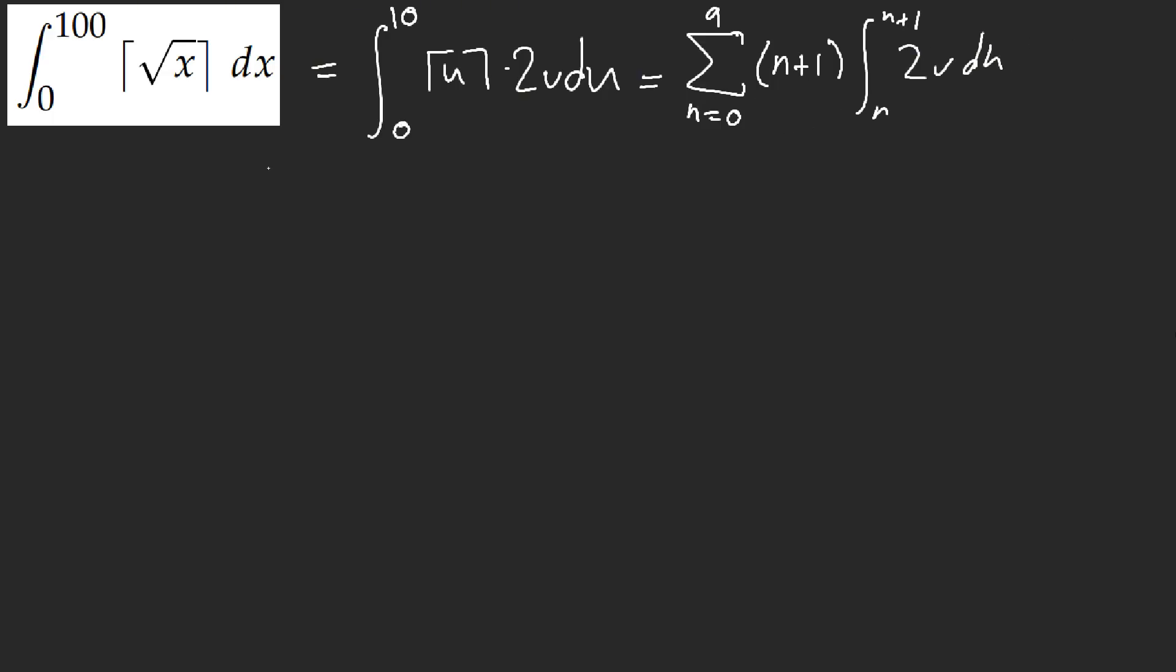So after that, it's just a sum. From n equals 0 to 9, n plus 1. This is u squared, n plus 1 squared minus n squared. That's just going to give us 2n plus 1.